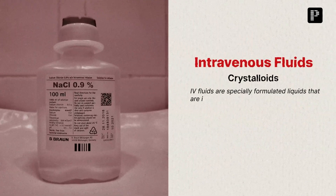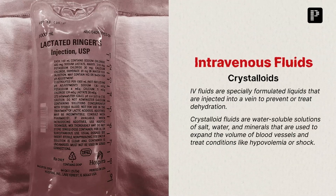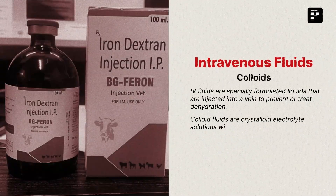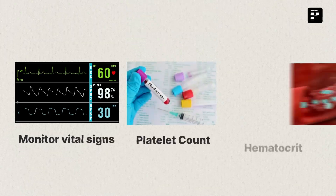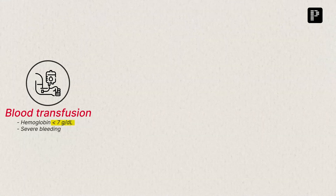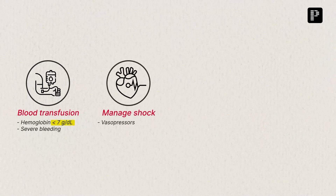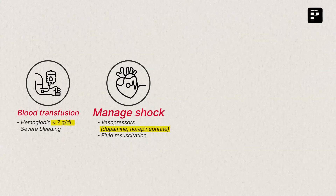For moderate to severe Dengue, hospitalization is required. Use crystalloids like normal saline or Ringer's lactate. For severe plasma leakage, use colloids like dextran or starch. Closely monitor vital signs, platelet count, and hematocrit. Blood transfusion is recommended if hemoglobin drops below 7g per deciliter or if there is severe bleeding. In cases of shock, use vasopressors like dopamine or norepinephrine along with continuous fluid resuscitation.